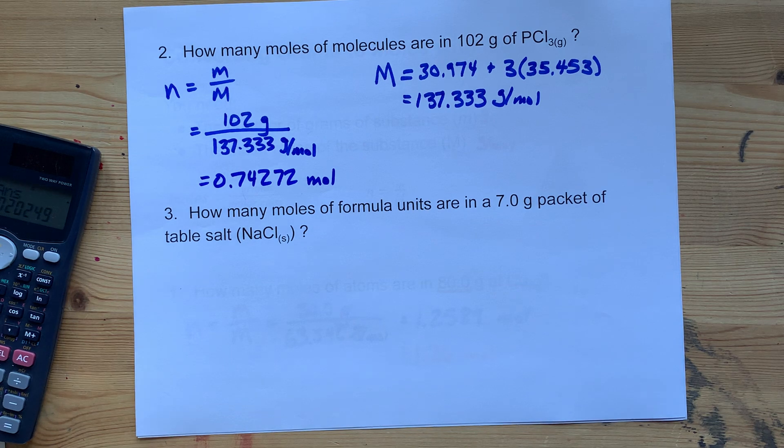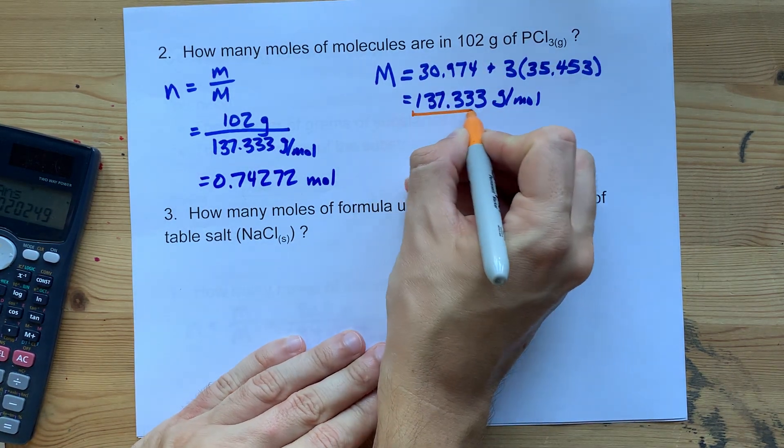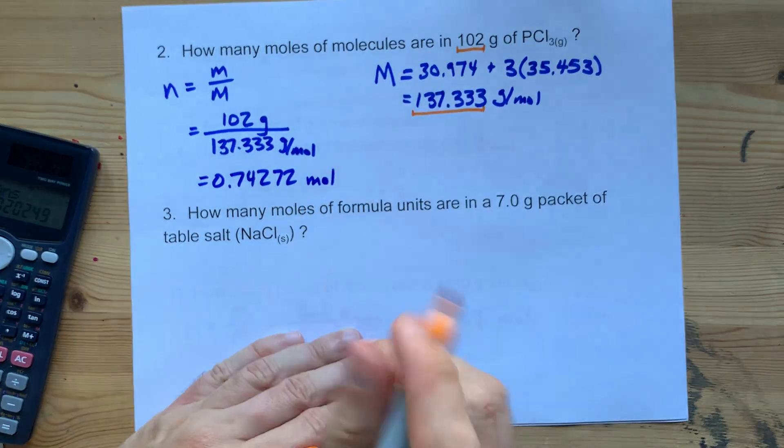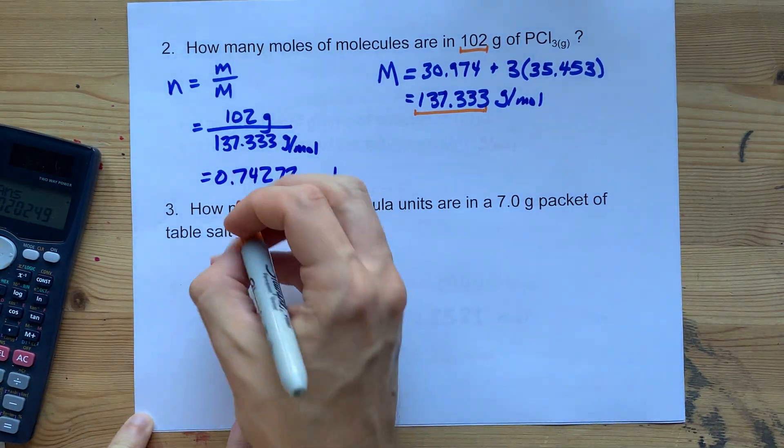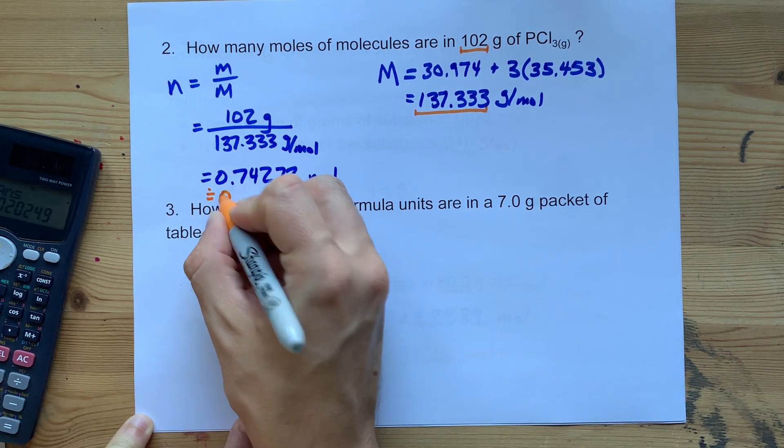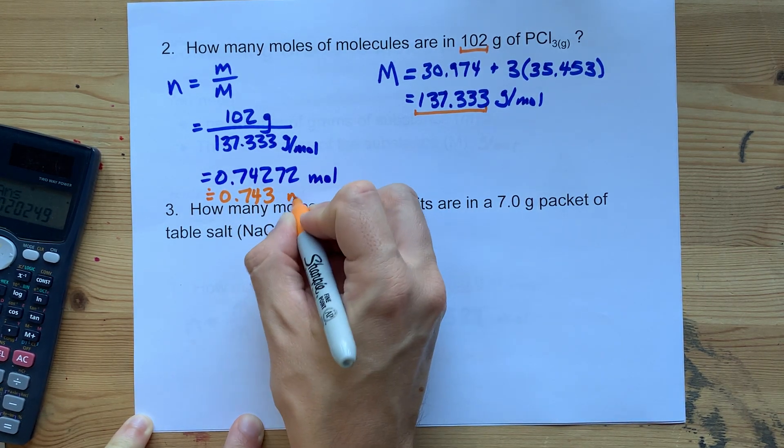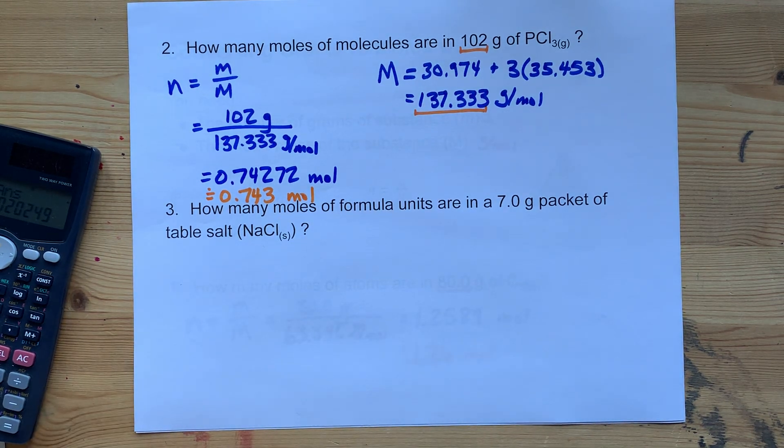And again with the significant figures. This one had six significant figures in the end, but we started off with just three in the original number of grams, which means we have to round this to three significant figures. That's 0.743 moles approximately.